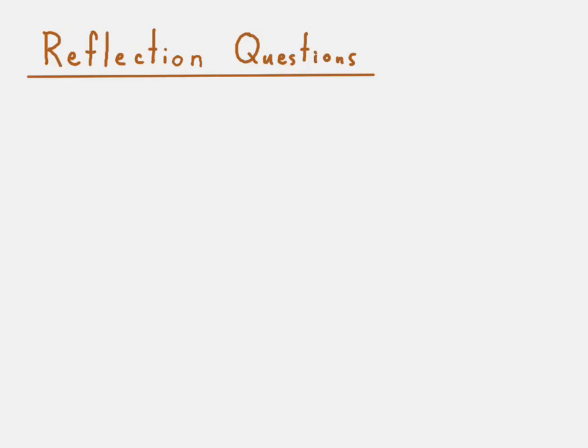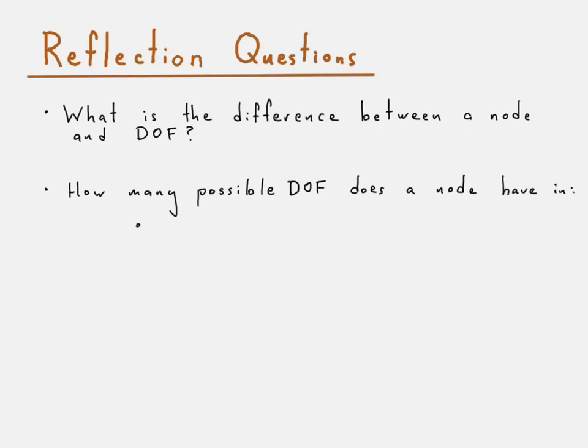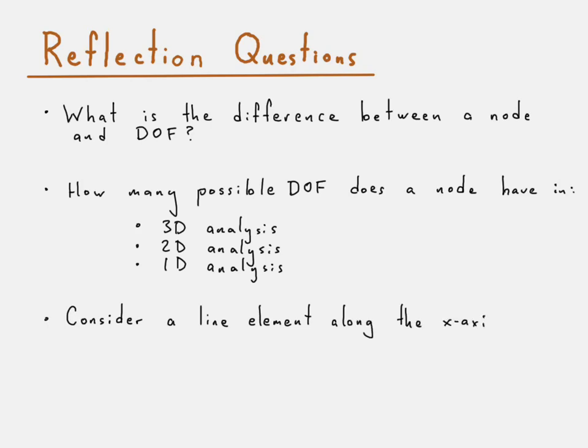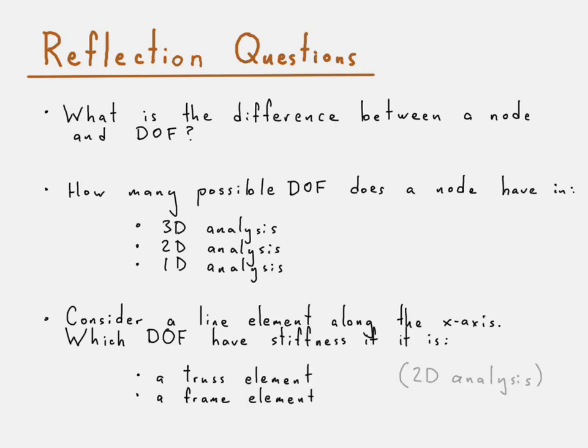And the following reflection questions are: What is the difference between a node and a degree of freedom? How many possible degrees of freedom does a node have for a three-dimensional analysis, for a two-dimensional analysis, and for a one-dimensional analysis? And let's say that we have a line element along the x-axis. Which degrees of freedom have stiffness if this line element is a truss element? How about if it's a frame element? Let's assume that this is for a two-dimensional analysis.